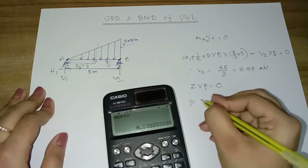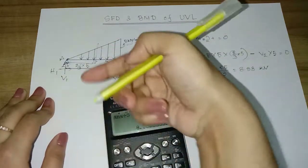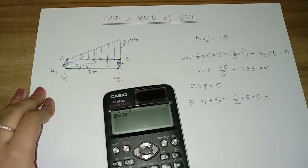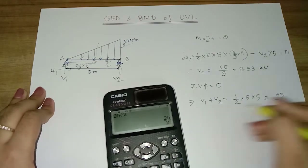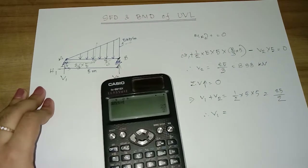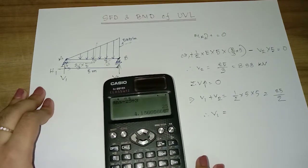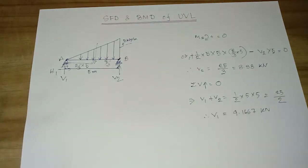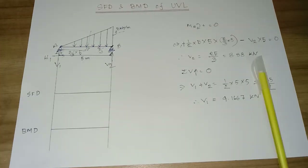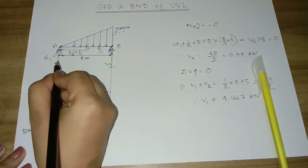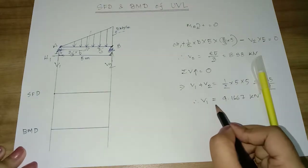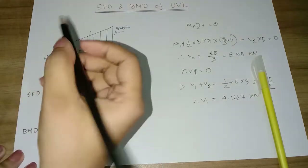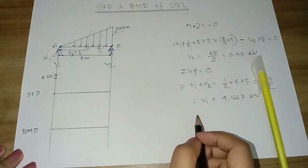For the vertical force summation: V1 plus V2 equals the total downward force. Total UVL force = half into 5 into 5 = 25/2 = 12.5 kN. So V1 = 25/2 minus 25/3 = 25/6, which is approximately 4.167 kN.